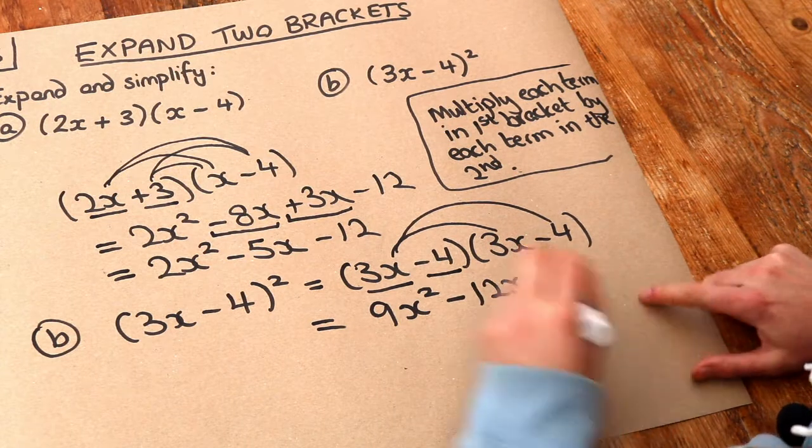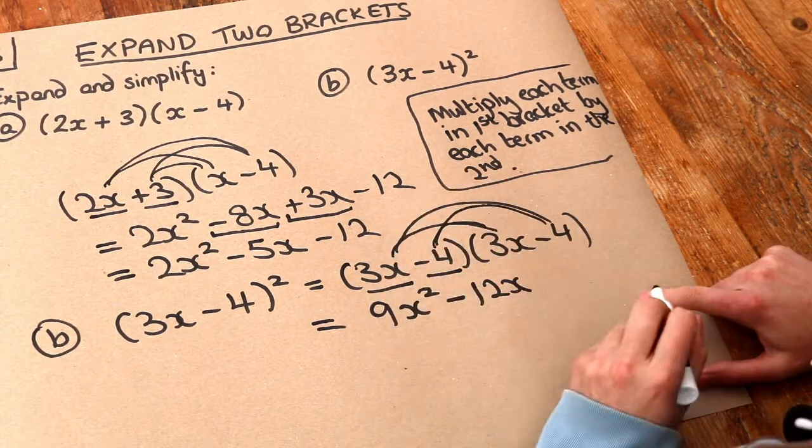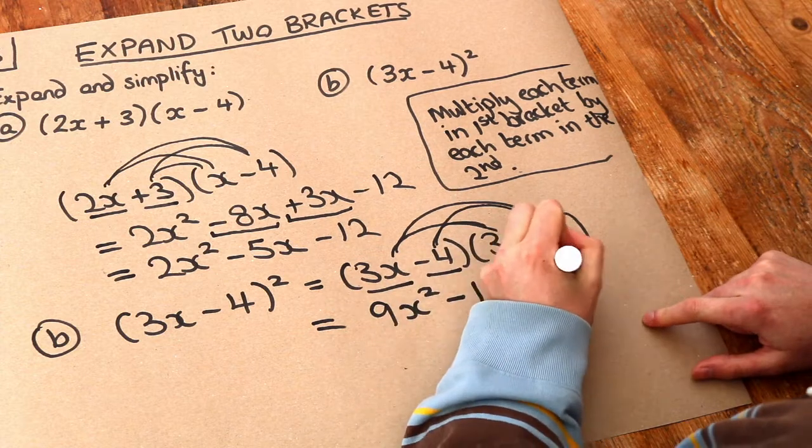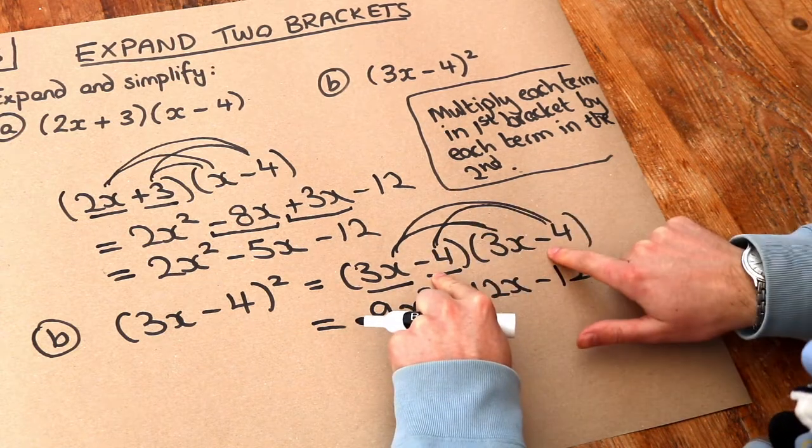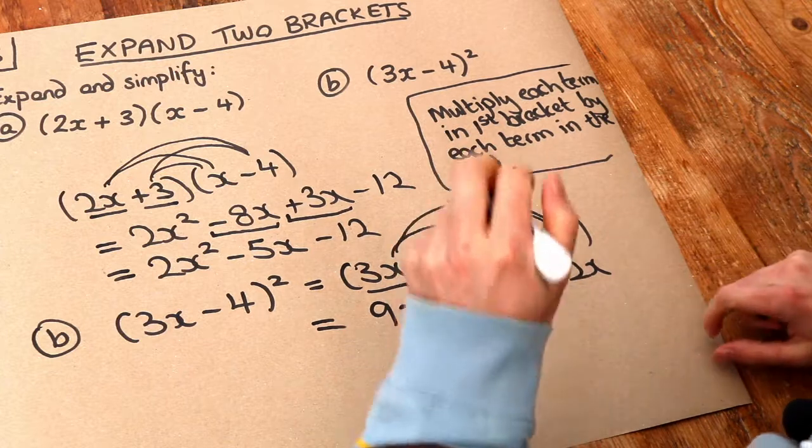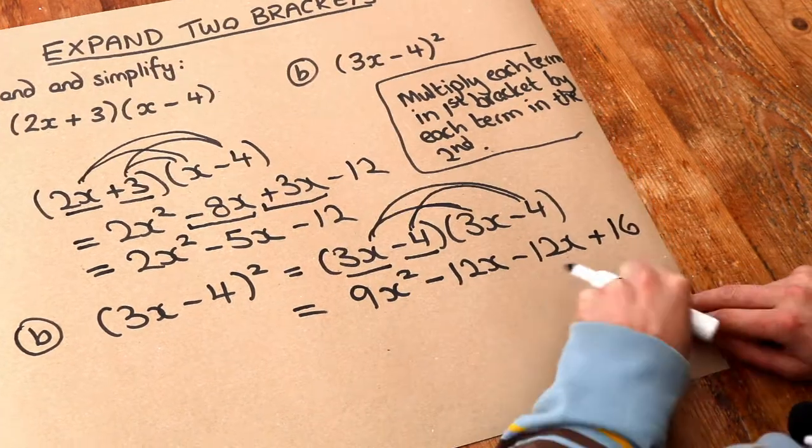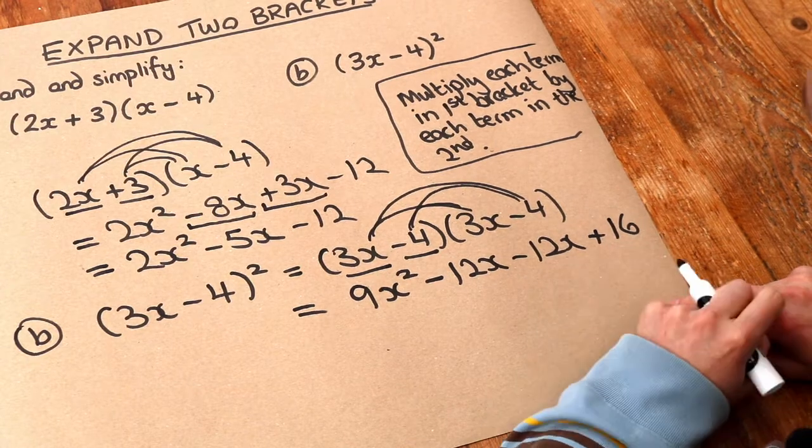And then we do the second thing in the first bracket multiplied by each of the things in the second. So we've got the minus 4 times the 3x, which is again minus 12x. And we've got the minus 4 times the minus 4. Negative times negative is positive. So it's positive 16. And that's another common student error that they accidentally put minus 16 instead of plus 16.